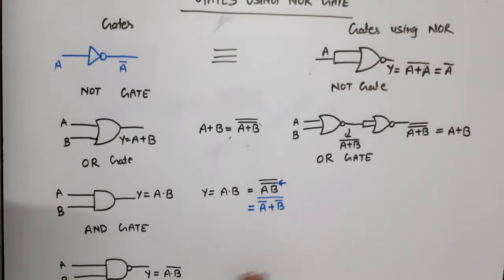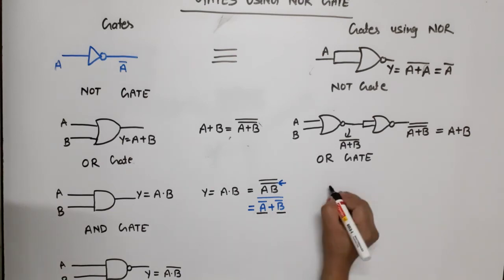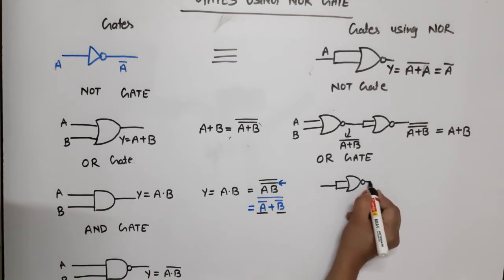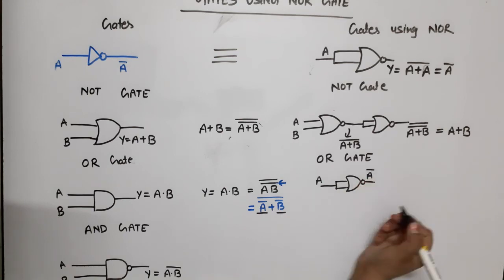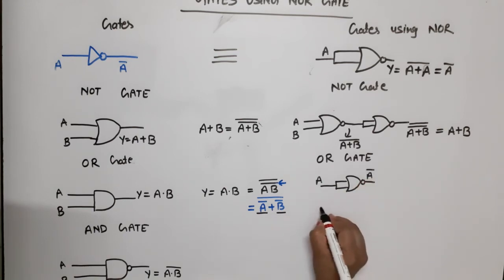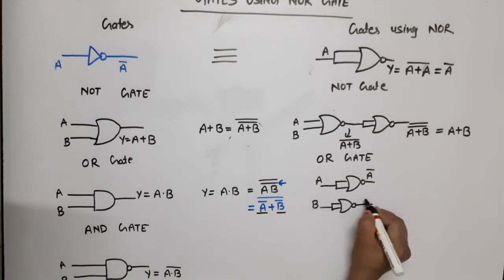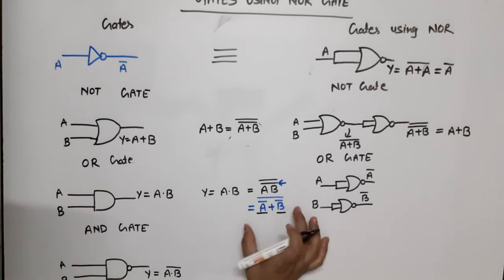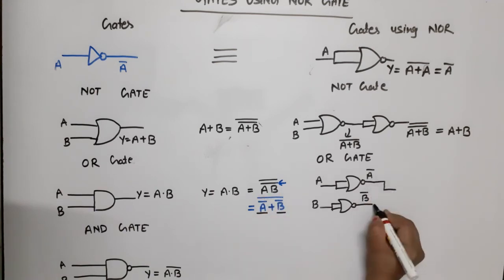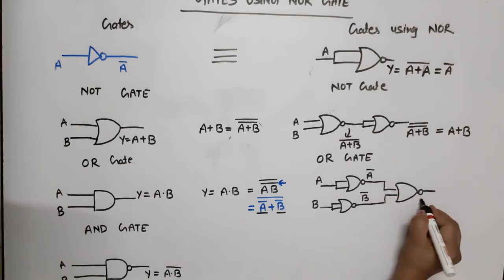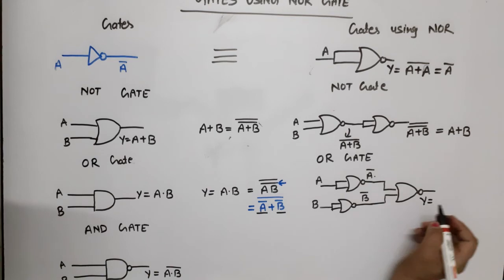To implement AND gate, first we need a NOT gate — one NOR gate with input A gives A bar. One more NOR gate with input B gives B bar. Now apply both A bar and B bar to one more NOR gate. Output Y equals A bar plus B bar, bar.